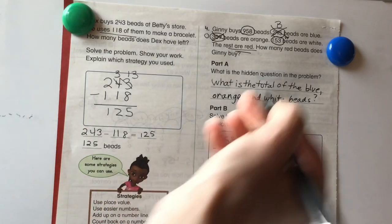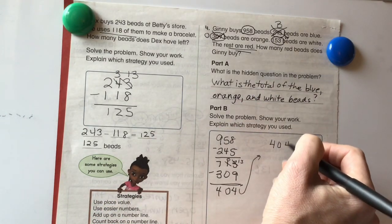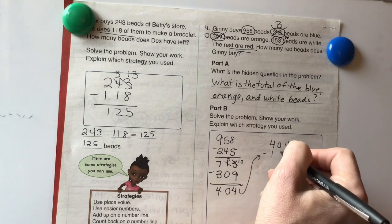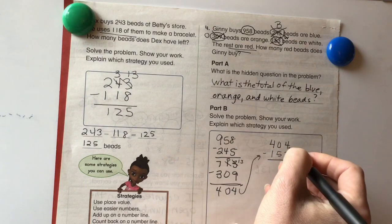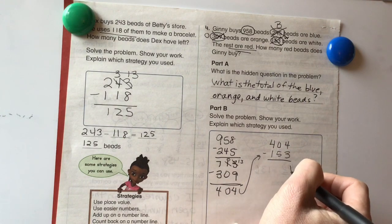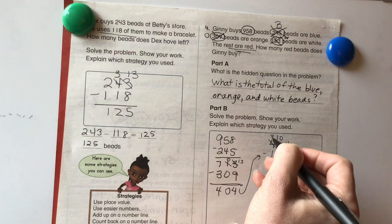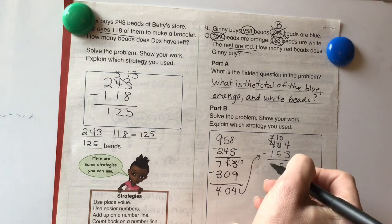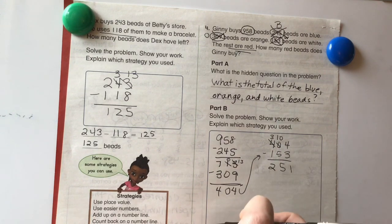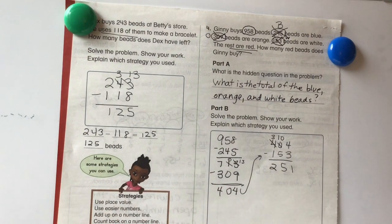Now we need to subtract those white beads. I'm just going to bring this over here. 404 is our total, minus 153 white beads. I'm going to cross that out. 4 minus 3 is 1. 0 minus 5 is not going to work. So we're going to take a group of 10 over. 10 minus 5 is 5. And 3 minus 1 is 2. So we know that there are 251 red beads. Great job, everybody.